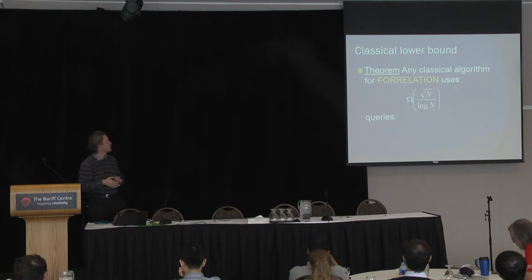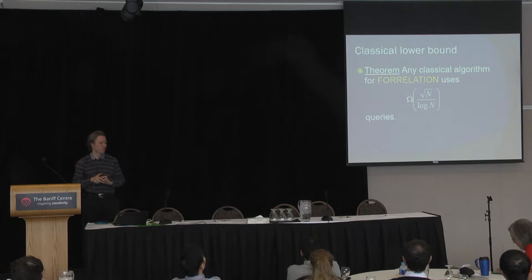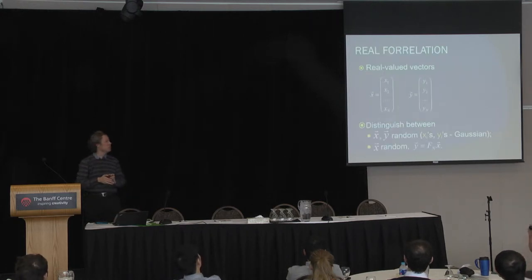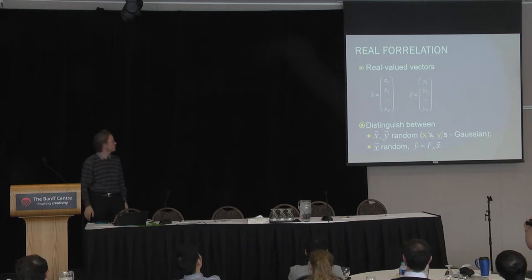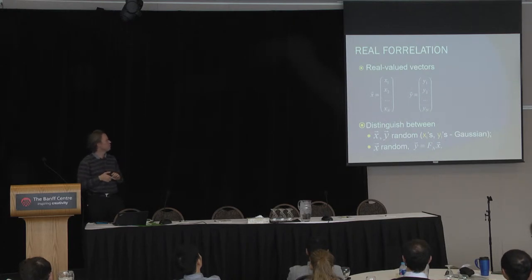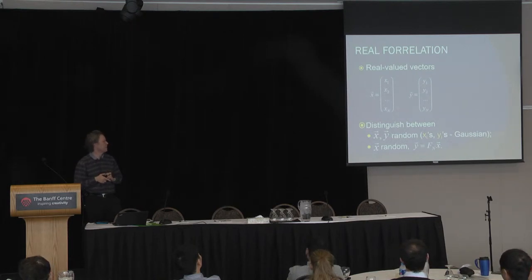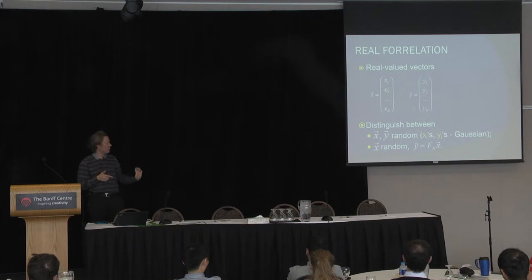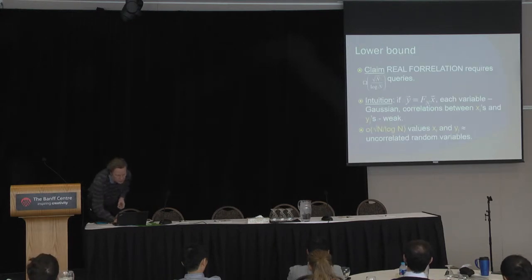The more involved part is the lower bound. We claim that any classical — meaning randomized — algorithm uses almost square root of n queries, and that is quite involved. We start by defining another problem called the real correlation, meaning real-valued correlation. In real-valued correlation, the input is two real-valued vectors where each component is a Gaussian random variable. We distinguish between the case when all elements of both vectors are independent Gaussians with identical distribution, and the case when one vector is exactly the Fourier transform of the other. The claim is that this problem requires almost square root of n queries.